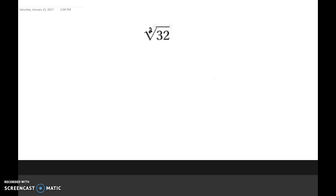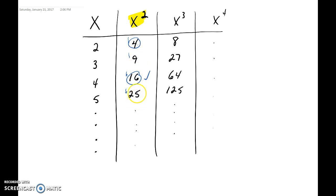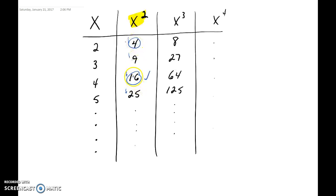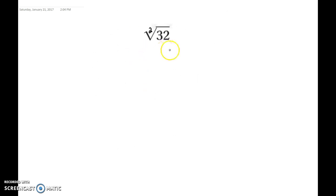If you choose the smaller number you're going to have to keep simplifying. The reason we look for these numbers is because all of them are perfect squares — I can take the square root of 4 (it's 2), the square root of 9 (it's 3), the square root of 16 (it's 4), and the square root of 25 (it's 5). We don't want numbers that divide into 32 but aren't perfect squares, because that does us no good.